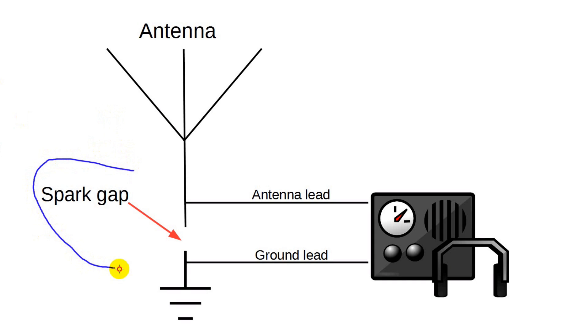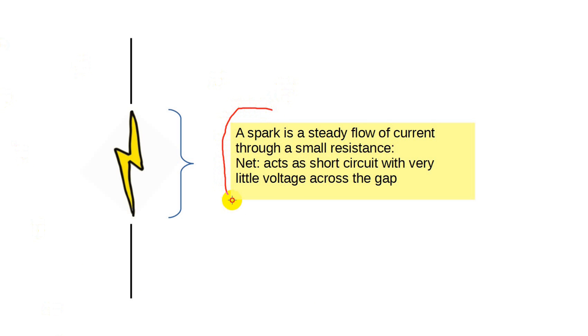This is how a lightning protector works. Inside the arrestor is a spark gap. Under normal operating conditions, there's no spark. But in the event of a lightning strike or a nearby strike that induces large voltages in your antenna, the spark will fire. The current flows from antenna to ground, bypassing your rig. The spark itself is a flow of current through a conductor, in this case air. When the spark is actually flowing, the voltage drop across the spark is not that high, on the order of several volts, and effectively acts as a short circuit. So this keeps the radio from seeing more than a few volts.